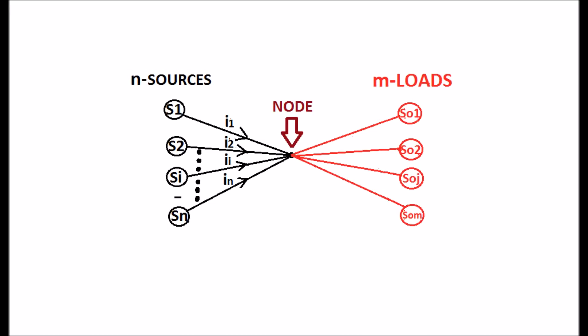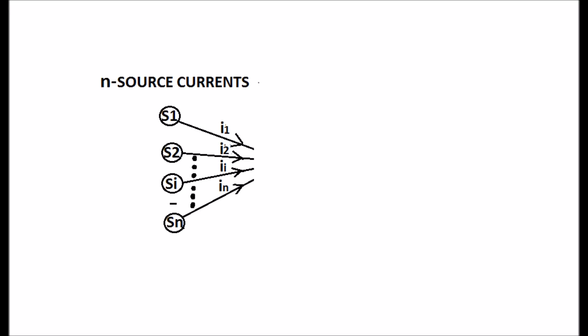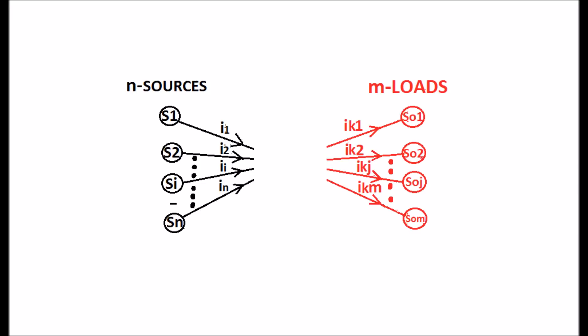The load currents are IK1 to IKM as shown in the display. The same N source currents are feeding power to the M loads through a network instead of a node.